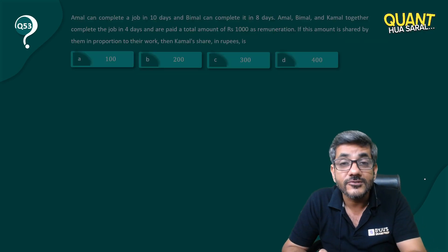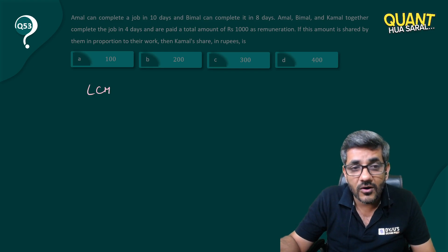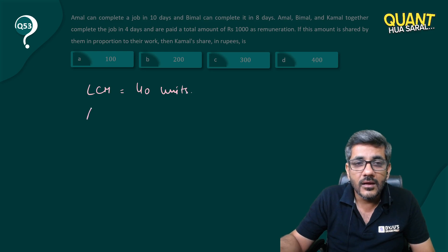Once again, as we have discussed before, let's take the LCM of 10 and 8 as the total work. So 40 units is the total work. Amal can make these 40 units in 10 days.